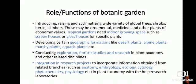The role of Botanic Garden is to introduce, raise and acclimatize a wide variety of global trees, shrubs, herbs, climbers — whether ornamental, medicinal or other plants of economic value. If the Botanical Garden is in a tropical country, tropical gardens will also need indoor growing space, called screen houses, glass houses or green houses for specific plants. Botanical Gardens should develop certain geographic formations like desert plants, alpine plants, marshy plants, aquatic plants, etc.